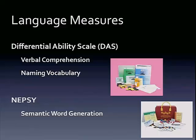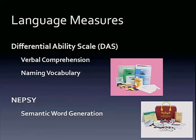It is a question as to whether the DAS is the best measure to use in a very normal sample. The verbal comprehension subtest looks at children's ability to follow directions and complete tasks based on verbal instructions. The naming vocabulary subtest is similar to an expressive vocabulary test — you show them a picture and they name the object, a very simple expressive naming task. We also looked at the NEPSI, a broad developmental neuropsychological test, specifically the semantic word generation subtest, which is basically semantic verbal fluency — animals, food, and drink.